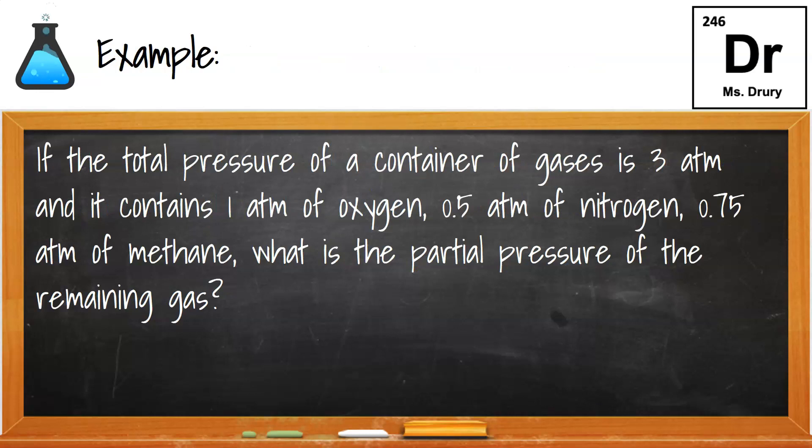So an example of what you might see is, if the total pressure of a container is 3, and it contains an atmosphere of oxygen, and 0.5 of nitrogen, and 0.75 of methane, what's the pressure of the remaining gas? So you can say that what normally would have happened was I would have added 1 plus 0.5 plus 0.75 plus something to get our x, and figure out what the x is by subtraction.